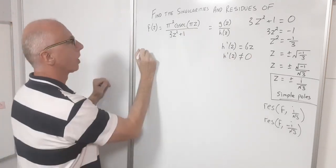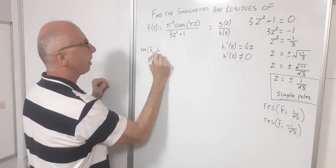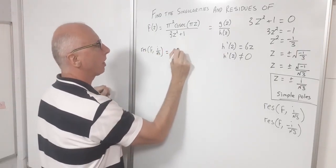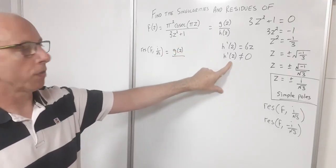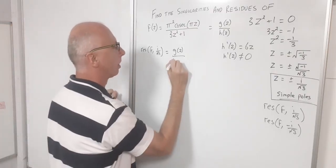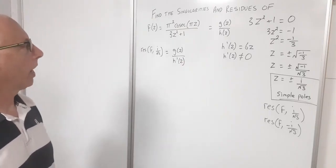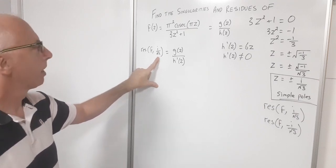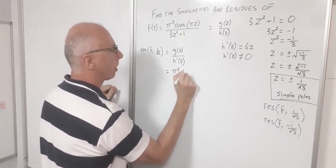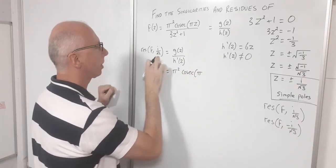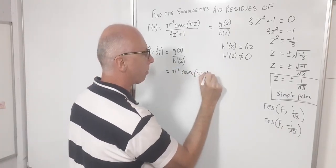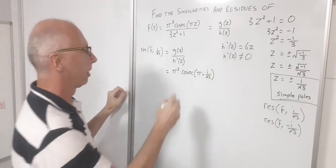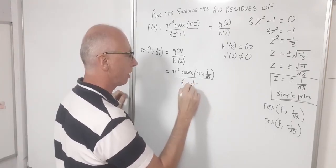For the residue of f at z = i/√3, we apply the derivative rule: g(z)/h'(z). The numerator gives us π² cosecant(π · i/√3) and the denominator is h'(z) = 6z evaluated at i/√3, which is 6i/√3.